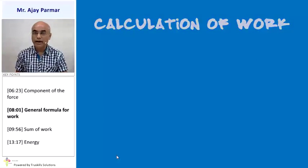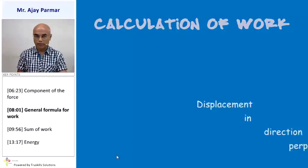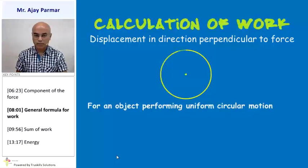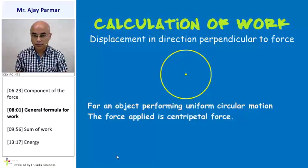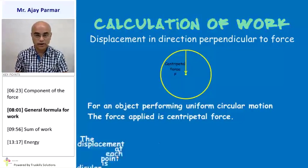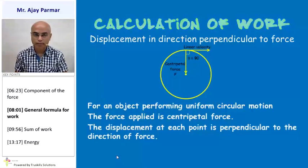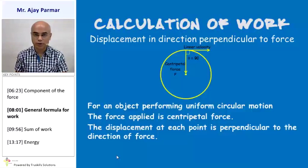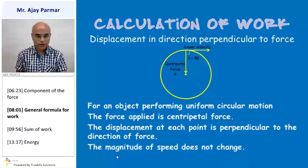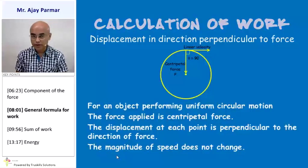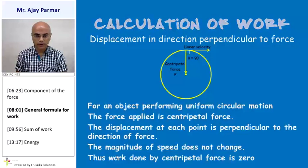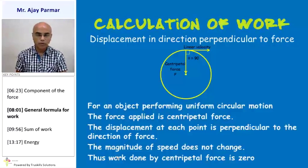When the direction of force and displacement are mutually perpendicular, consider uniform circular motion. An object performing uniform circular motion is acted upon by centripetal force directed towards the center, and at every point the displacement is perpendicular to the centripetal force. Since there is no change in speed, the centripetal force does no work. Whenever force and displacement are perpendicular, the work done by that force is zero.